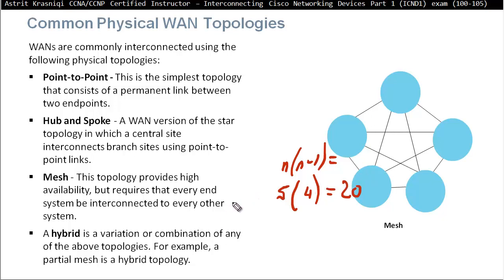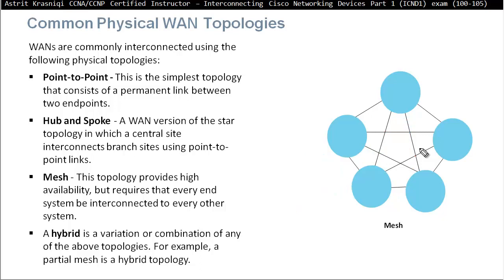So the better choice, if you want to save some money, is maybe not to connect everything with everything else. Maybe just skip a few connections, and you still have good availability — so that even if one site fails, you're still able to communicate.